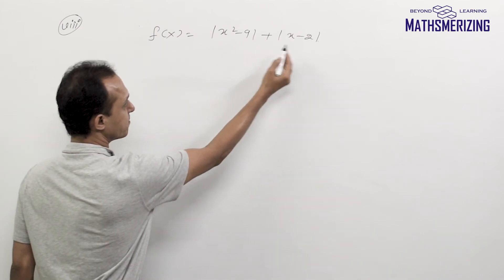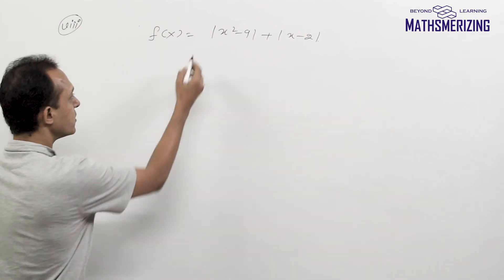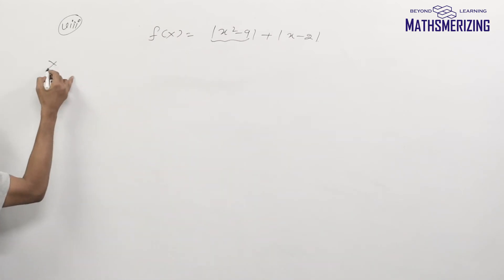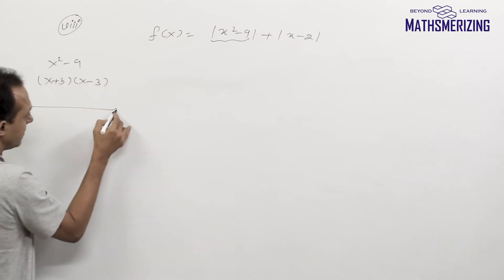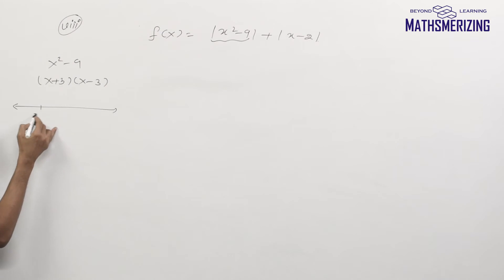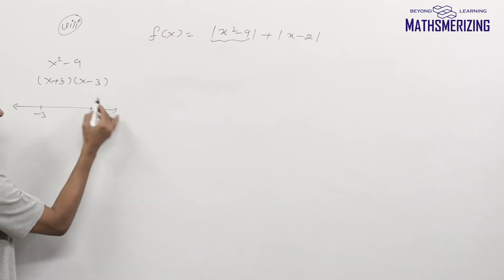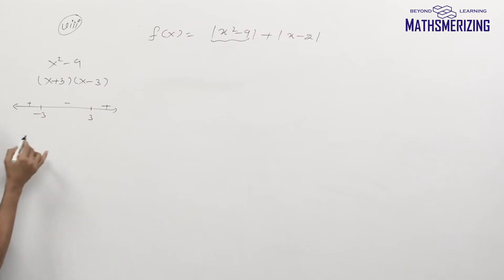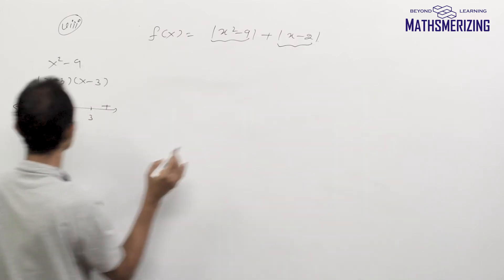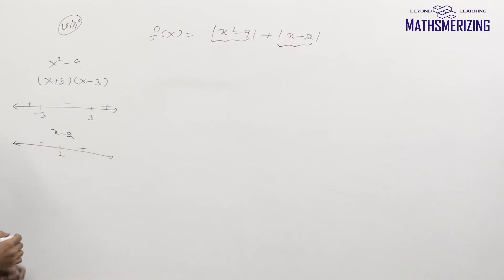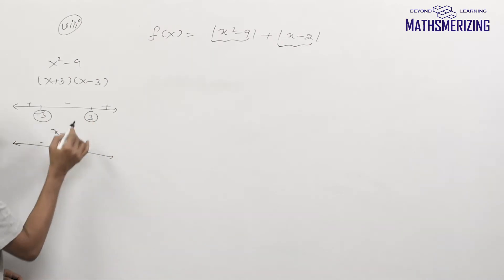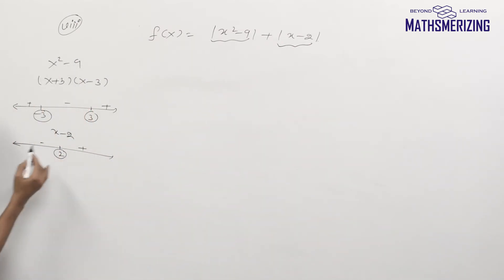Now consider mod of (x squared minus 9) plus mod of (x minus 2). I will solve these separately. For x squared minus 9, the roots are x = plus 3 and x = minus 3. So on the number line: minus 3 and plus 3, with the rightmost sign being plus, giving plus, minus, plus. For x minus 2, the definition changes at 2: rightmost plus and the left region minus. So x squared minus 9 changes definition at minus 3 and plus 3, and x minus 2 changes at 2.